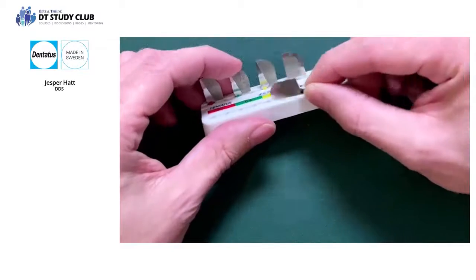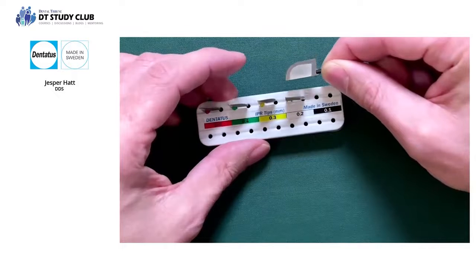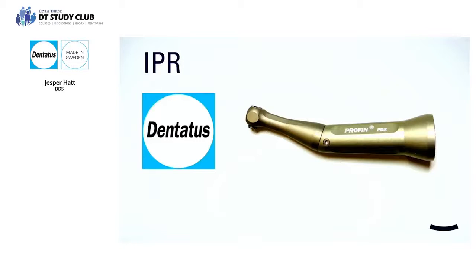So even after you have done your IPR, you can polish the approximal surfaces with these tips. The tips go into the Dentatus handpiece.